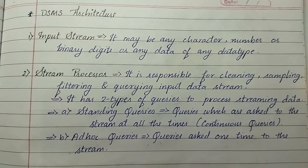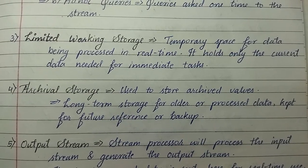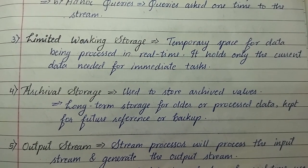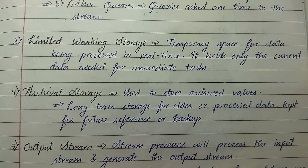Third is limited working storage or temporary space for data being processed in real time. It holds only the current data needed for immediate tasks.